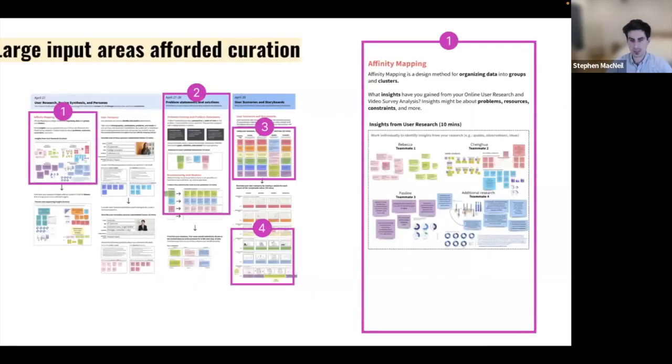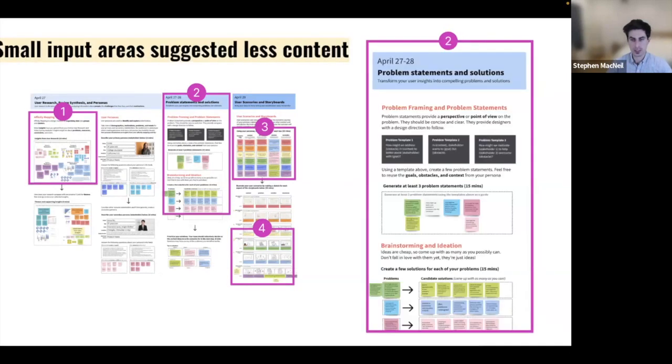And in the first example, we can see how the activities were scaffolded. So here we can see each activity had a title, it had a description, and it had this large input area for students to add their design ideas. And here we can see four team members that are affinity mapping their user research. Here's another class period. We can see that there's two activities, one related to problem framing and one related to ideation. And in the first activity, when they're coming up with problem statements, they could see examples of problem statements before generating their own. And then they would take these problem statements into this next activity around ideation, where they're required to brainstorm as many ideas as they could for each of the problems in parallel. So this example shows how different sized input boxes implicitly suggested to students how much content they should be adding.